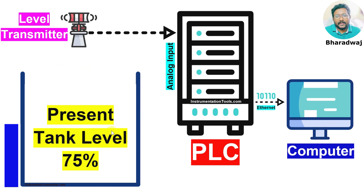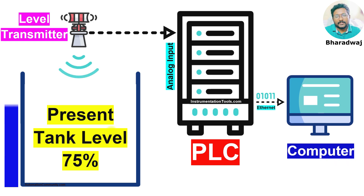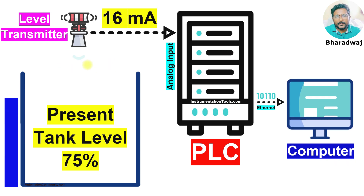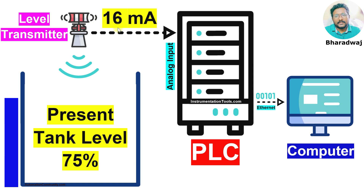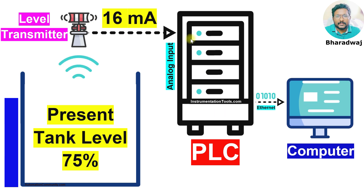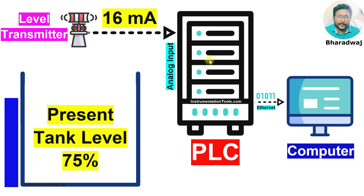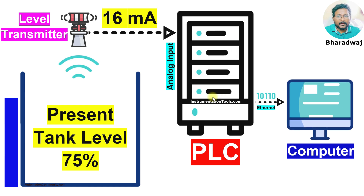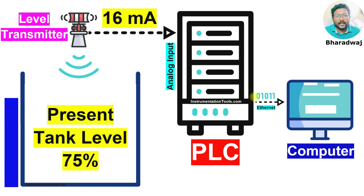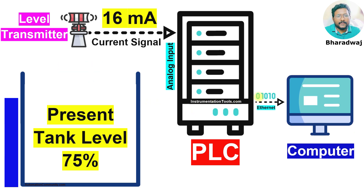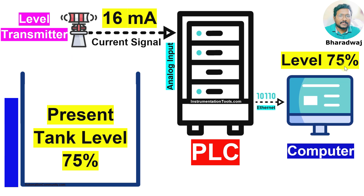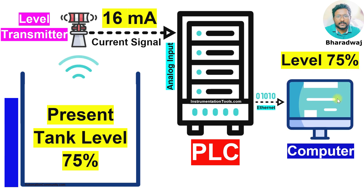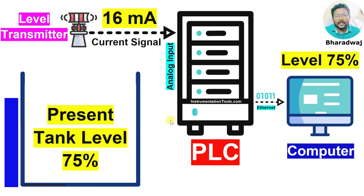When the tank level reaches 75%, the transmitter sends 16 mA to the PLC. The PLC calculates the tank level and updates the value to 75% on the graphics.